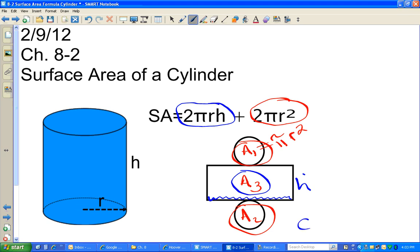So this length, in order to wrap completely around the circle, has to be the same as the circumference of the circle. The circumference of a circle is 2 pi r. So the 2 pi r is giving us this length. Multiply that times the height, and that gives us area 3.